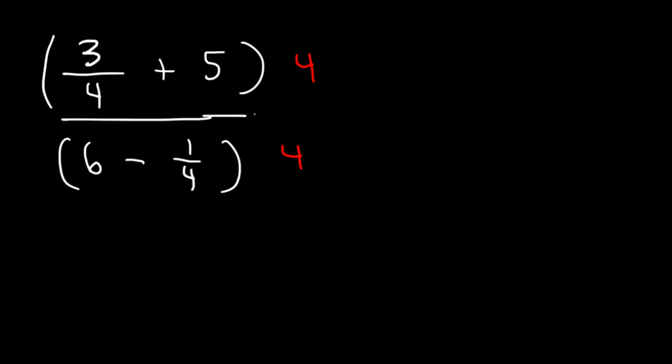So let's distribute 4 to 3 over 4 and 5. 4 times 3 over 4. If you multiply these two, 4 is basically 4 over 1. The 4s cancel and you get 3.